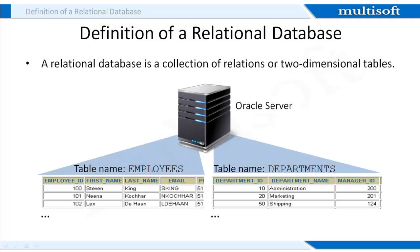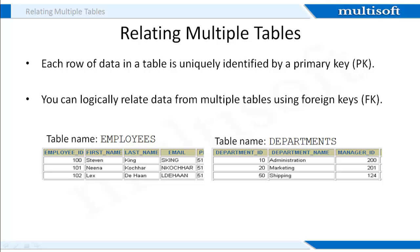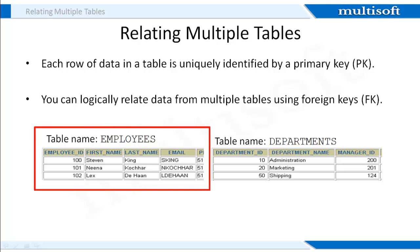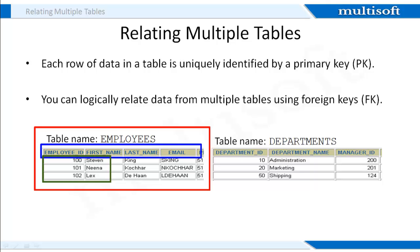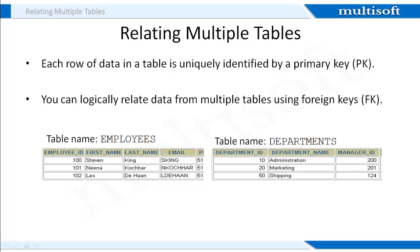A relational database uses relations or two-dimensional tables to store information. For example, you might want to store information about all employees in your company. In a relational database, you create several tables to store different pieces of information, such as an employee table, department table, and salary table. Each table contains data that describes exactly one entity — for example, the employees table contains information about employees. Categories of data are listed across the top of each table and individual cases are listed below, making it easy to visualize and use information.